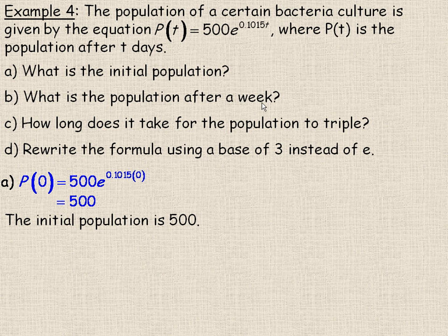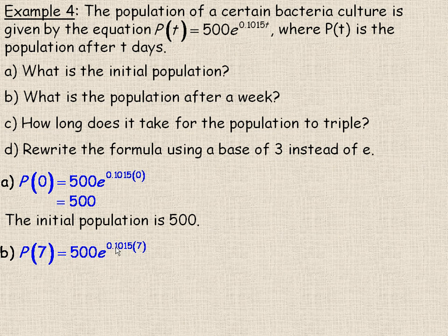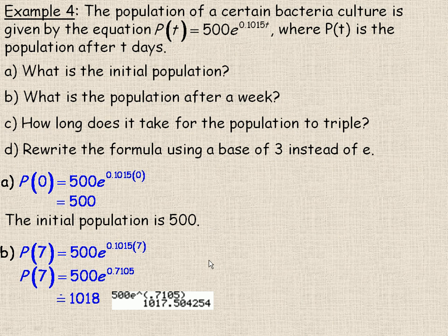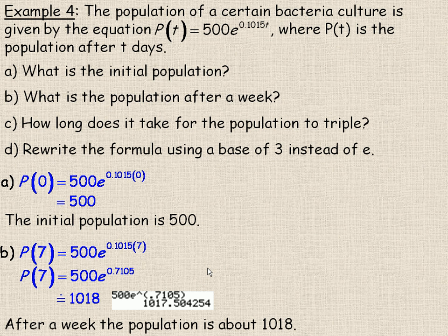For part B, it asks: what's the population after a week? A week would be 7 days. We would not put 1 in place of T because the time is measured in days, not weeks, so we'd put 7 in place of T. So it would be 500 times E to the power of 0.1015 times 7. We simplify the exponent first — 7 times 0.1015 is 0.7105. We raise E to that power and then multiply by 500, and we get approximately 1,018. You can't have part of a bacteria, so we round to the nearest whole number: about 1,018.